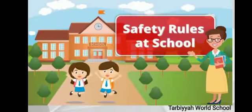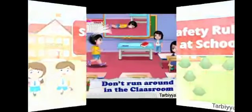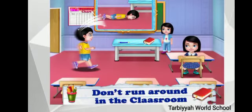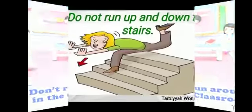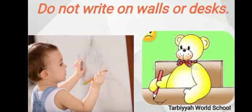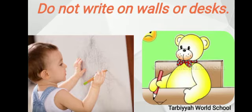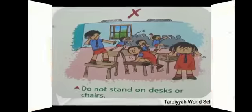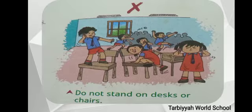Now let's see the safety rules at school — the rules we have to follow. We don't run around in the classroom, as we may fall. We do not run up and down the stairs — you may hurt yourself. We do not ride on walls or desks, and we do not stand on desks or chairs — you may fall down.